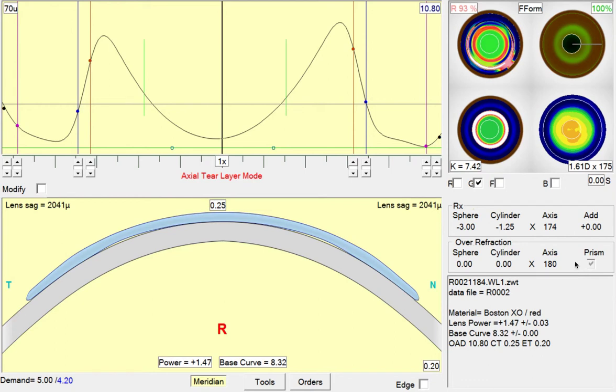In this demonstration, we're going to relieve some of the bearing at the back of the reverse curve and the horizontal meridian of the lens.